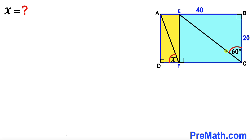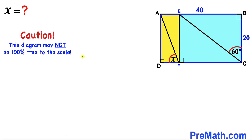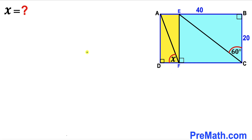Angle BCE is 60 degrees, whereas angle AFD is represented by X, and our task is to calculate this angle X. Please don't forget to give a thumbs up and subscribe, and keep in mind that this figure may not be 100% true to scale. Let's get started with the solution.